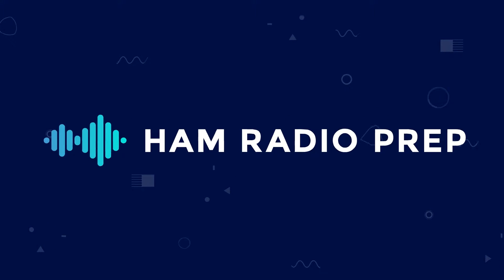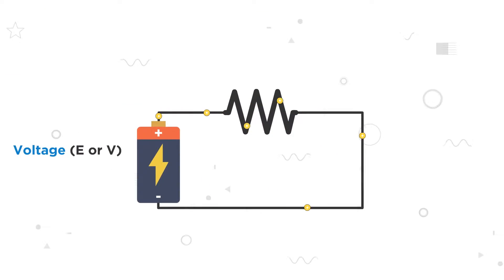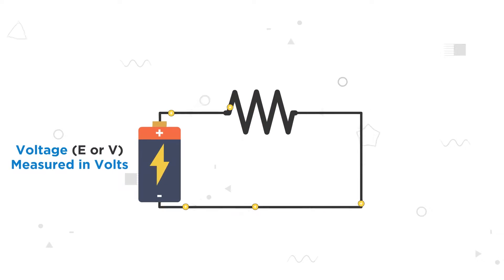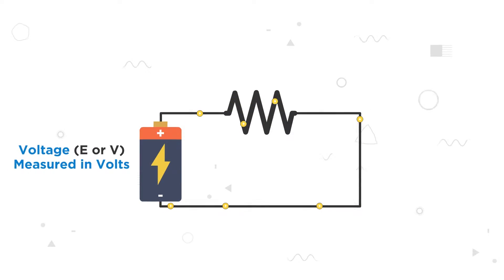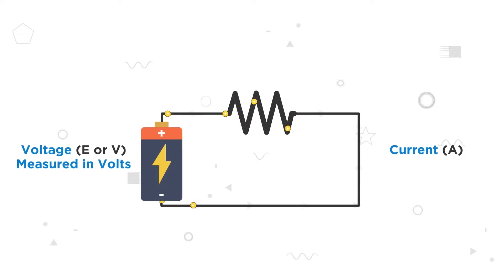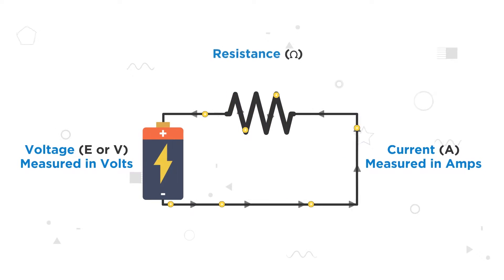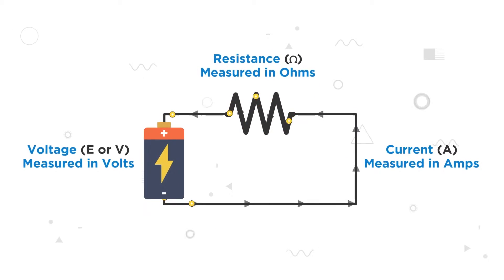Key concepts for electrical principles. Voltage is the electromotive force that causes electrons to flow and is measured in volts. Current is the flow of an electric charge and is measured in amperes. Resistance is the property that resists current flow.